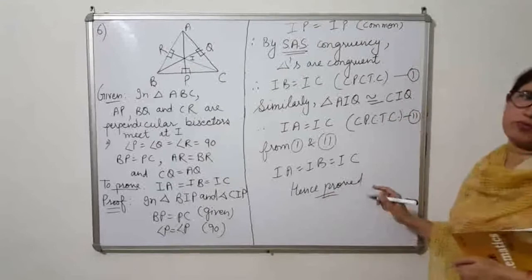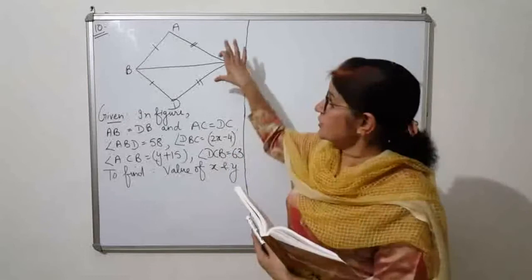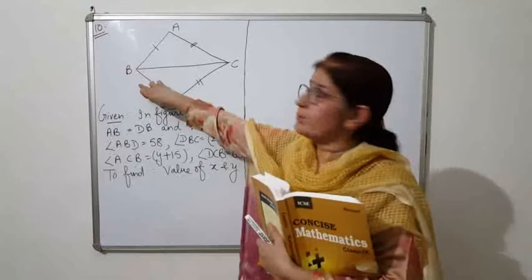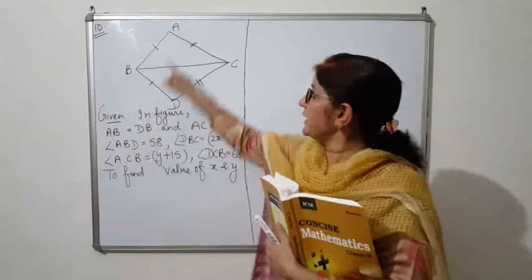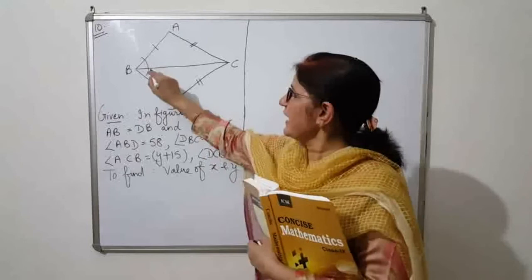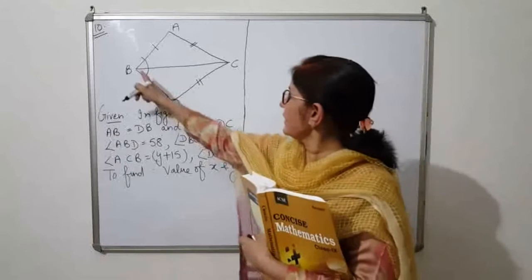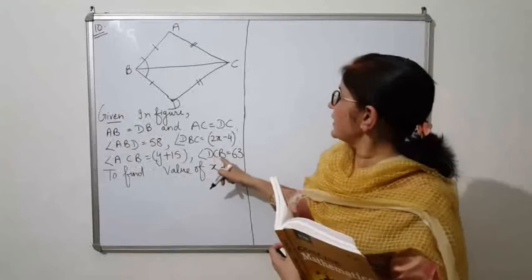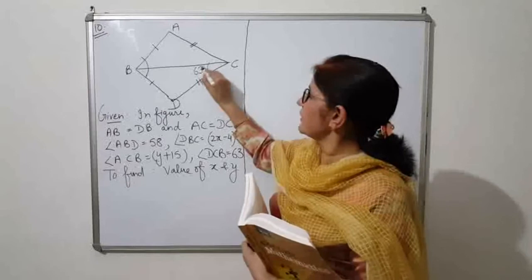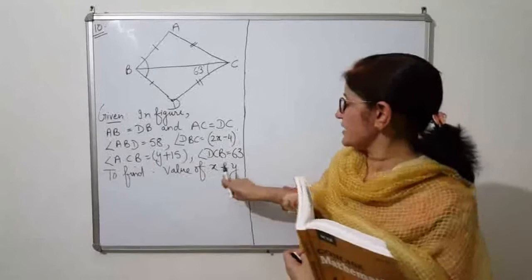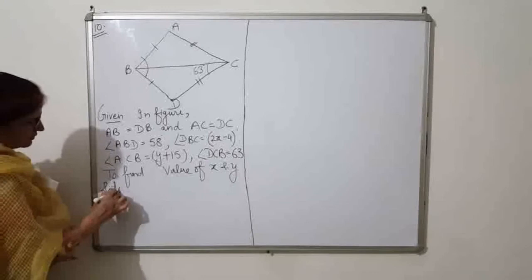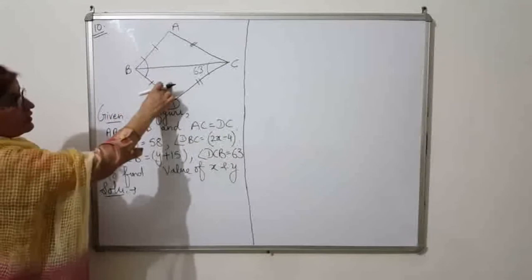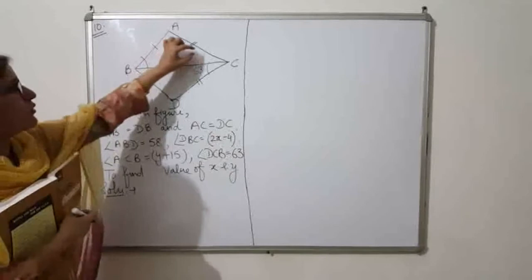Next, question 10. In the figure, AB equals BD, AC equals DC, angle ABD equals 58 degrees, angle DBC equals 2X minus 4, and angle DCB equals 63 degrees, with angle ACB given as Y plus 15. We have to find the values of X and Y. First we will prove the two triangles congruent, then use CPCTC to find the angles, and substitute to calculate.